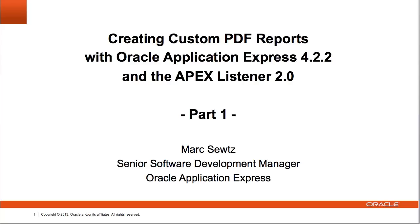The Apache FOP-based printing option, included in APEX 3.0 at no charge, only allows for minimal customizations, while the BI Publisher-based printing option does provide flexible report layout features but requires a separate license for BI Publisher.